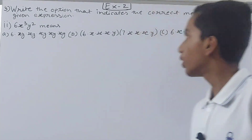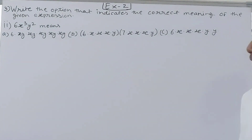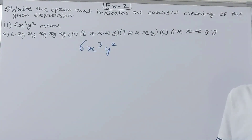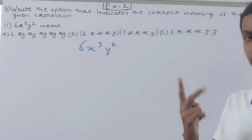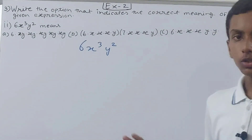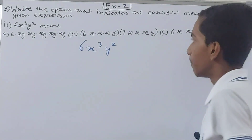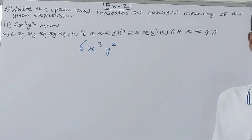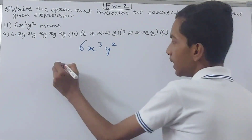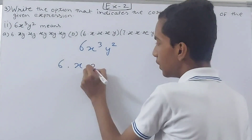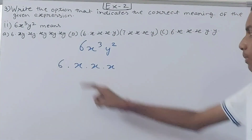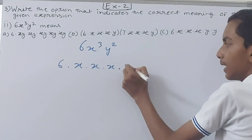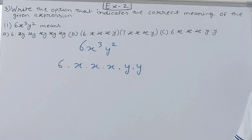Moving on to the next part: what does 6x³y² mean? The expression is 6x³y². Again, there is no sign between 6, x³, and y², which means we have to multiply. This time I'll use dots to make it clearer. So 6 dot x³ can be written as x into x into x, and y² means y into y — two times.